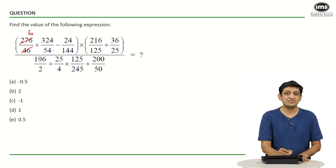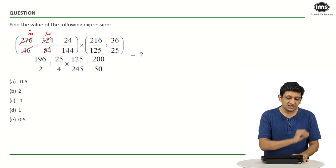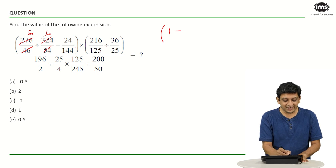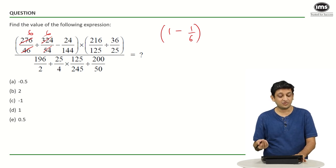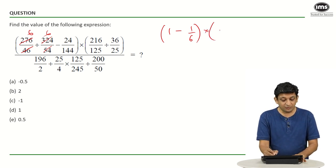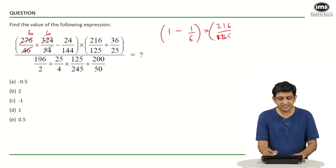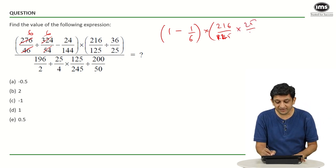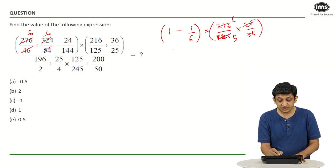For 324 by 54: 5 sixes are 30, 4 sixes are 24, giving 324. So we have 6 divided by 6, which is 1. Then 1 minus 24 by 144 — if you are good with tables you will know that 24 sixes are 144, so that gives 1 minus 1/6, which is 5/6. Multiplied by 216 by 125, written as 6 cubed by 5 cubed, multiplied by 36 by 25 flipped to 25 by 36. Cancelling gives us 6 by 5.